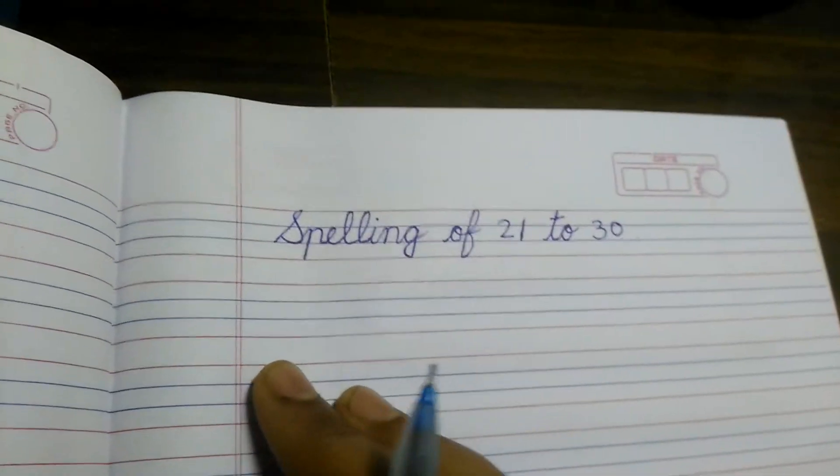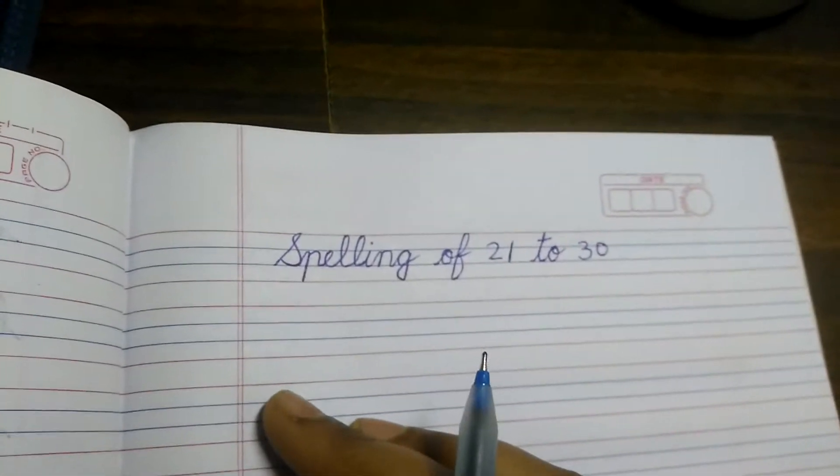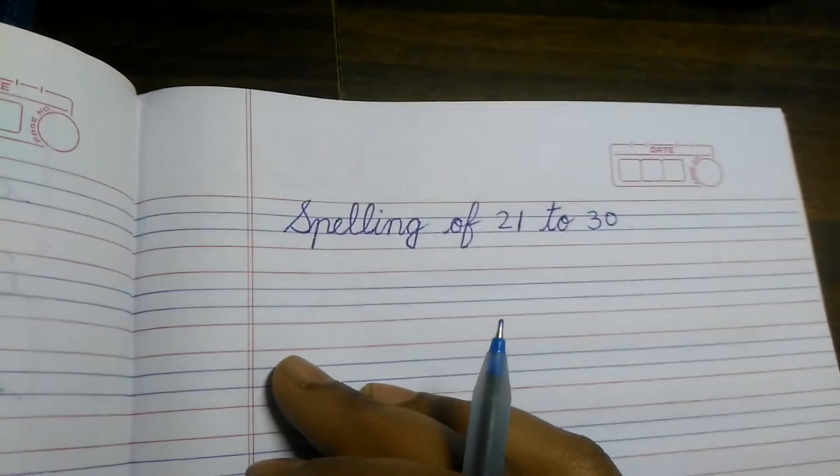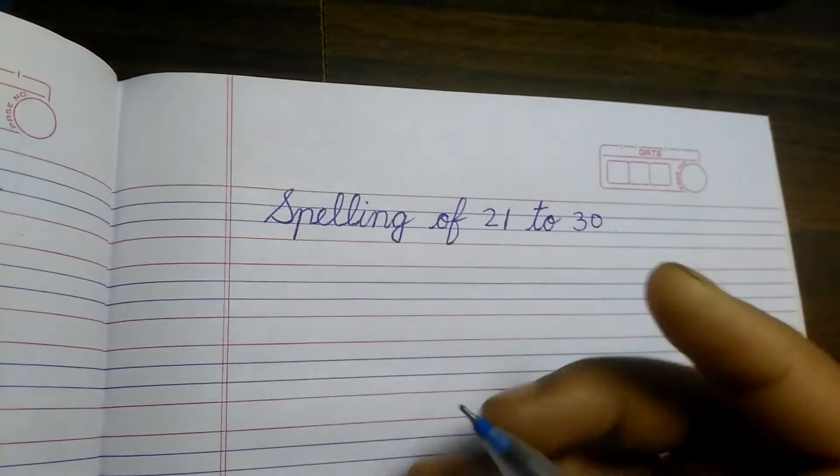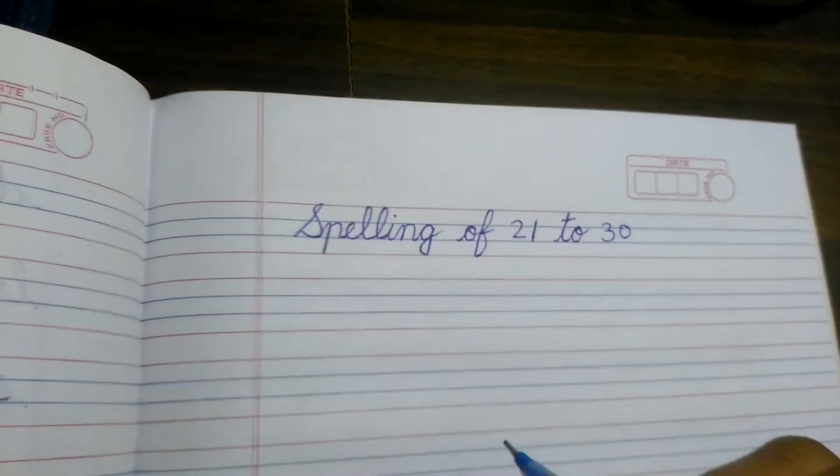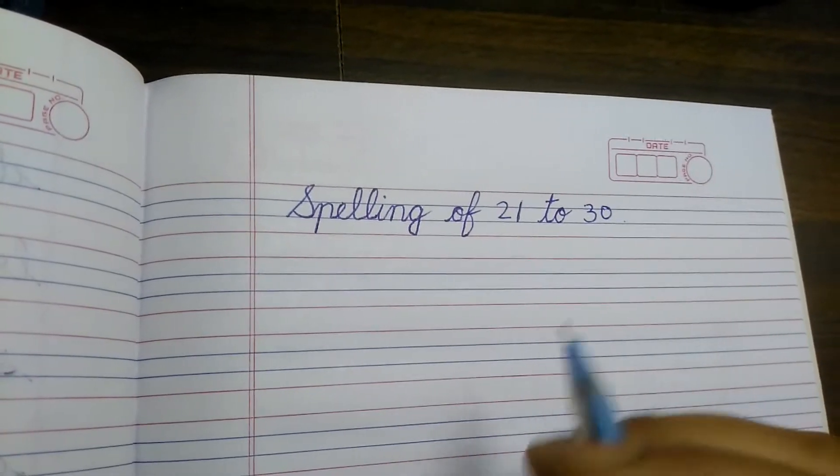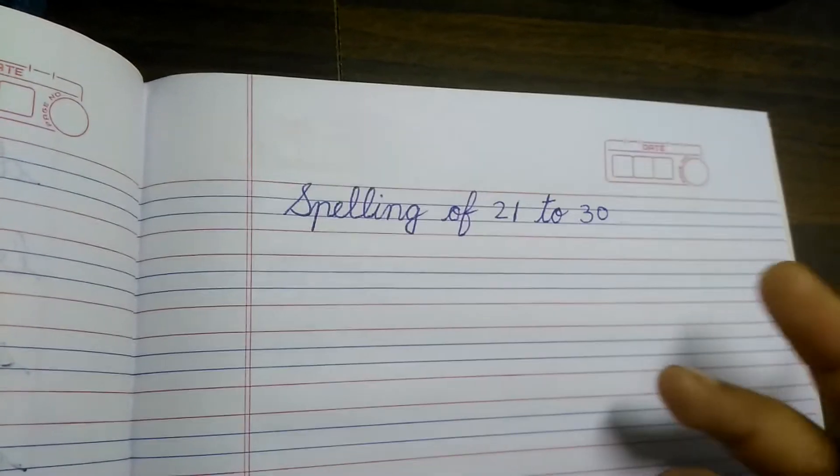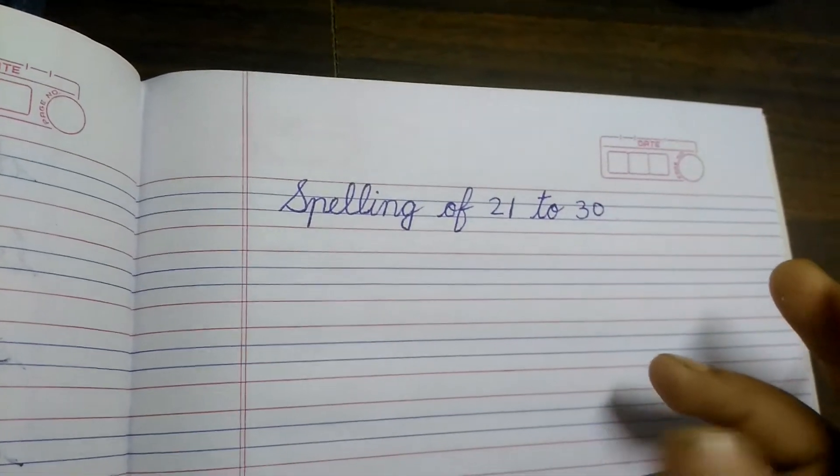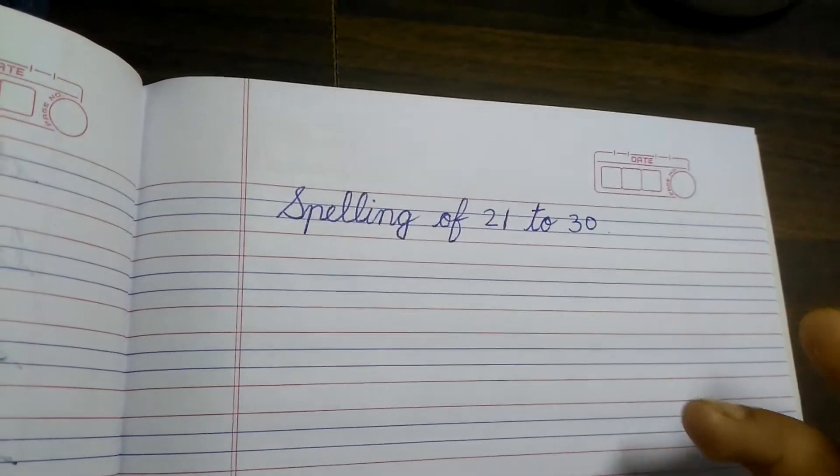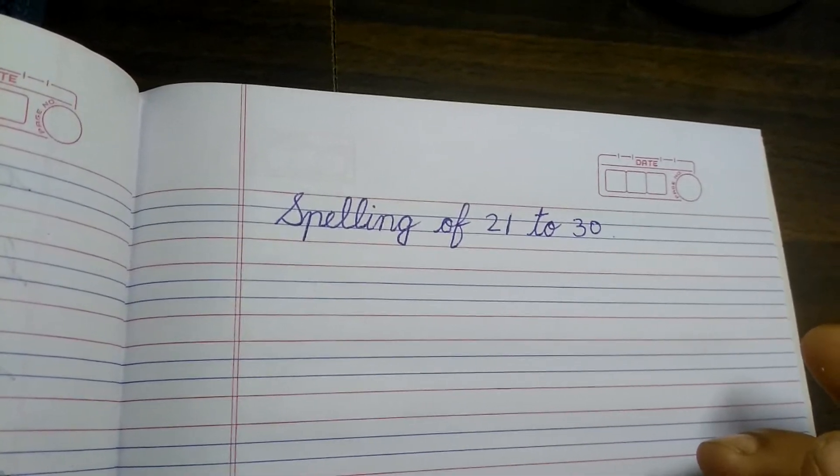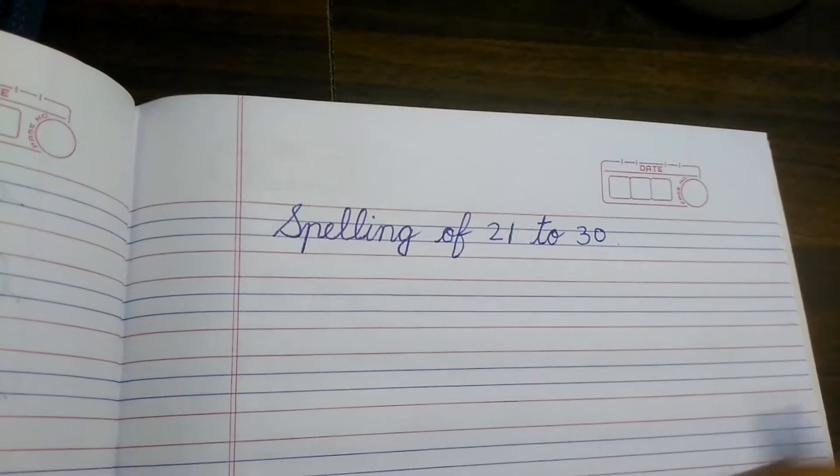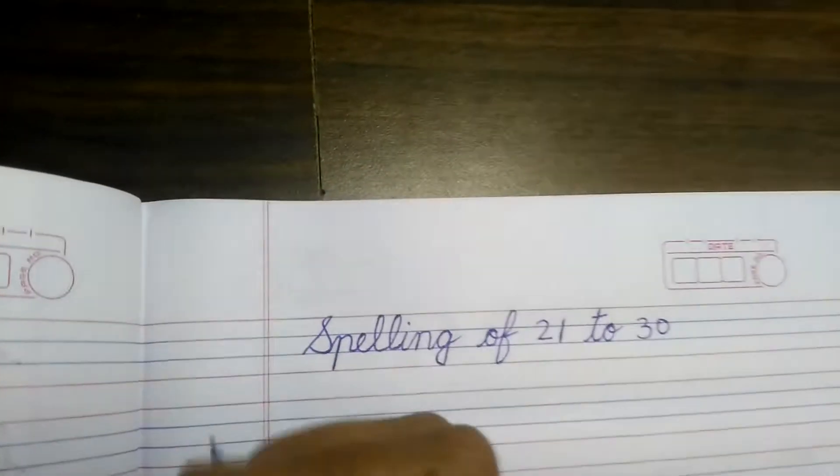Hello friends, today we are going to see spellings of 21 to 30, how to write them in cursive handwriting. Let us start. Before that, I am going to tell you that I have made videos for spellings 1 to 10 and 11 to 20, and you will find the links below in the description if you want to see them. Let us start with this.